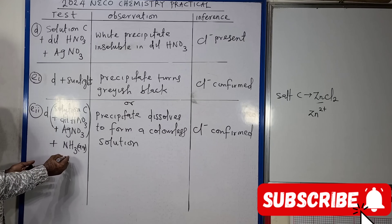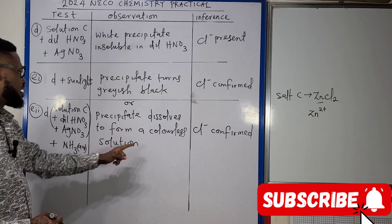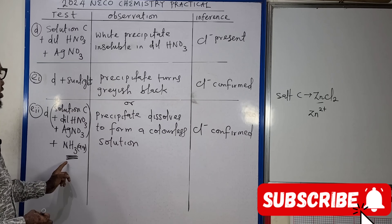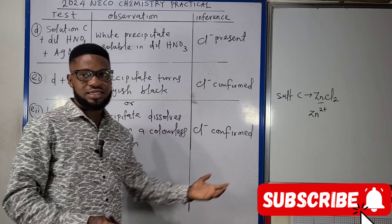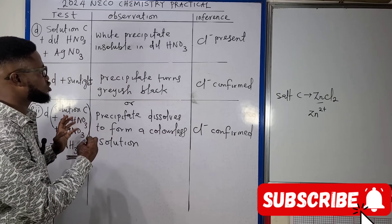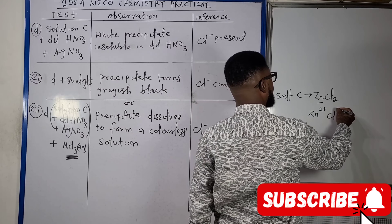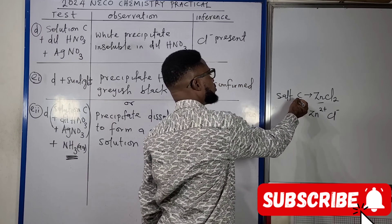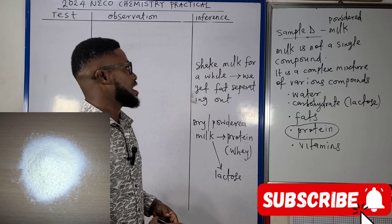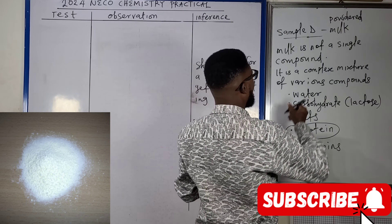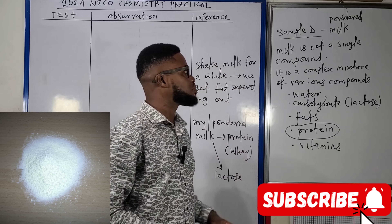Alternatively, to the second portion — solution C plus dilute HNO₃ plus silver nitrate — after having the white precipitate insoluble in dilute HNO₃, if we add aqueous ammonia, the precipitate will dissolve to form a colorless solution. In that case, chloride ion is confirmed. That is how we handle the questions on salt analysis for sample C. We also have another sample — sample D — in this year's exam.